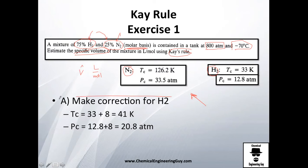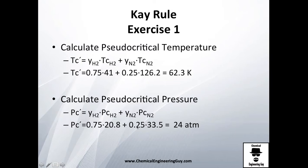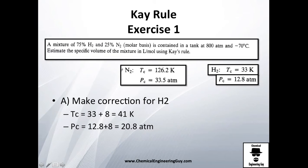The Newton correction essentially just adds 8 to the critical temperature and 8 to the critical pressure in atmospheres. So instead of using 33 Kelvin and 12.8 atmospheres, we're going to use 41 Kelvin and 20.8 atmospheres. Nitrogen gas doesn't need to be corrected because it's relatively large compared to hydrogen gas.